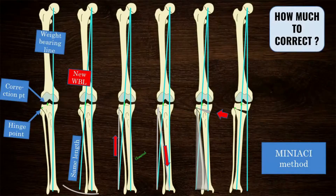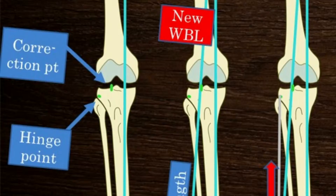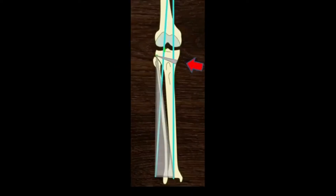Knowing the deformity angles, we need to determine the size of the opening wedge in millimeters. The Miniachi method is most popularly used. On a weight-bearing X-ray, the existing weight-bearing line is drawn, the correction point is chosen according to osteoarthritic changes, and the hinge point is marked on the lateral tibial cortex. The new weight-bearing line — of the same length as the old line — is drawn through the correction point, then connected to the hinge point and on to the center of the ankle joint. The angle at the hinge point is noted. If there is soft tissue varus, any JLCA greater than 2 degrees is subtracted. A triangle with the hinge point as apex and the resultant angle is drawn; the base of the triangle gives the measurement for the opening wedge.